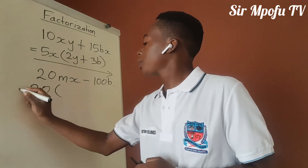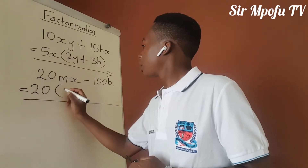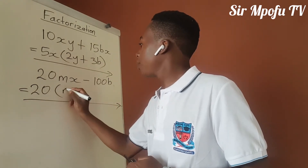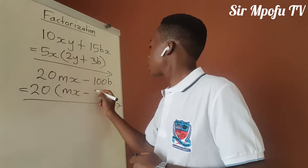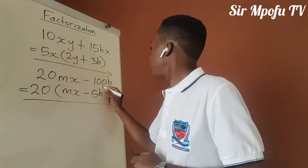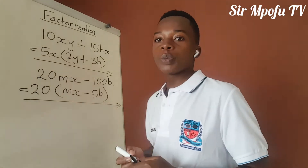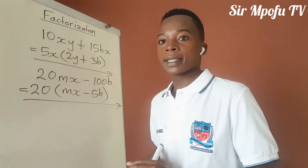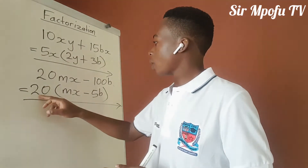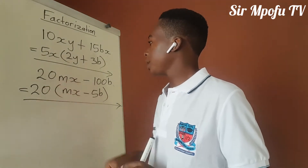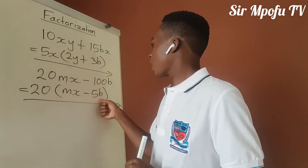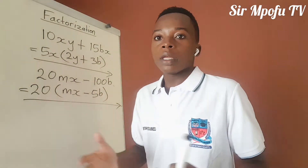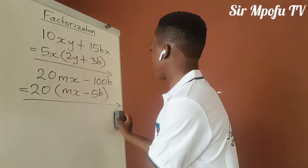So here you remain with mx minus 5b. That will be the final answer. You are going to notice as well that if you expand this — 20 times mx, it will be 20mx, then 20 times negative 5b, it will be 100b. That will be your proof.